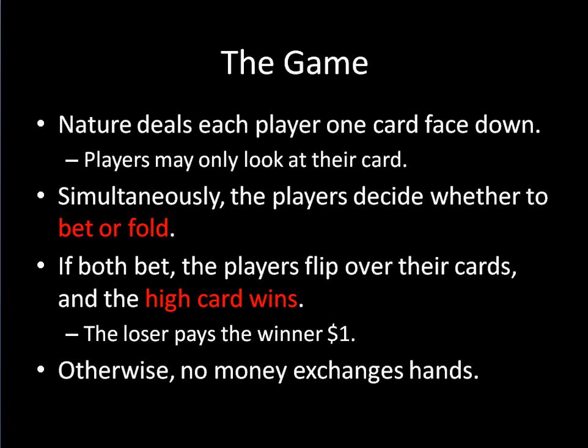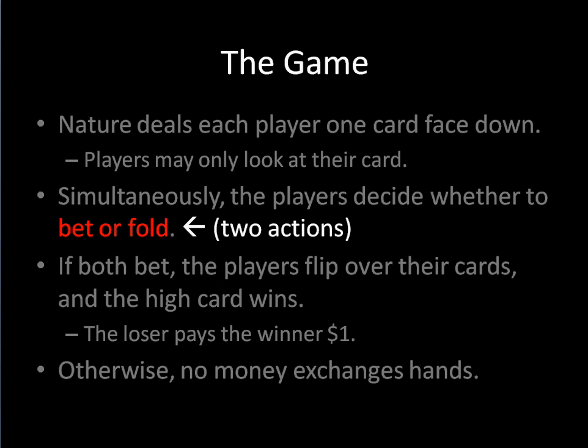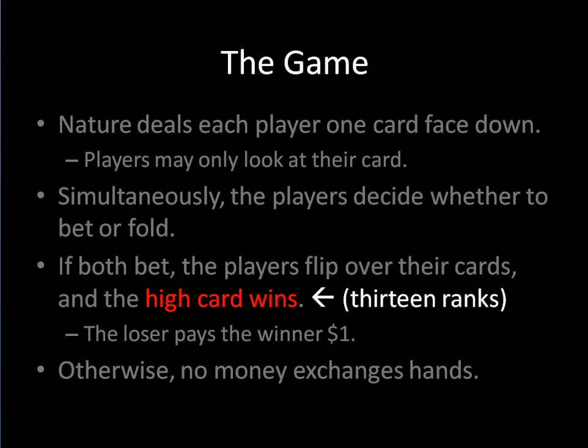The next thing I want to draw your attention to is the bet or fold and high card wins parts. These two pieces of information tell us how many pure strategies each player is going to have. We need to know this because we've only used matrices to solve simultaneous move games in the past. But we're going to run into some trouble if we try doing things like this. You might think this isn't going to be that big of a deal because there are only two actions — bet or fold. But there's another big issue: there are 13 ranks of cards, starting with the lowly two and ending with the mighty ace.